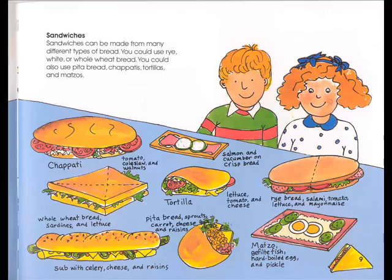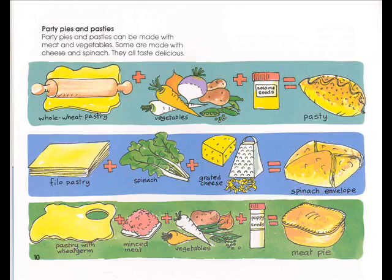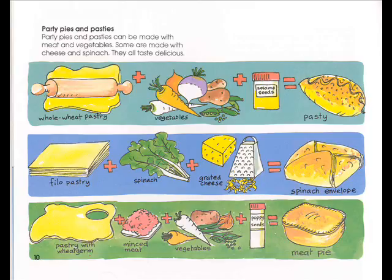Party pies and pastries can be made with meat and vegetables. Some of them are made with cheese and spinach. They all taste delicious. Whole wheat pastry plus vegetables plus sesame seeds equals pastry. Filo pastry plus spinach plus grated cheese equals spinach envelope. Pastry with wheat germ, minced meat plus vegetables, and poppy seeds equals a meat pie.